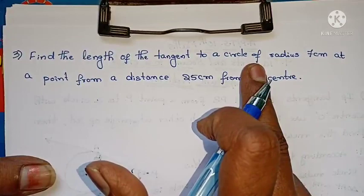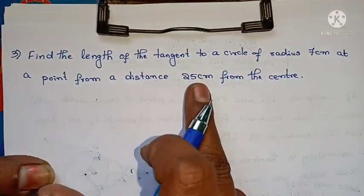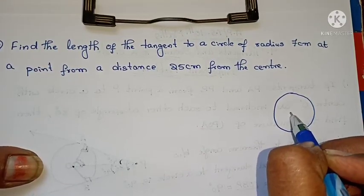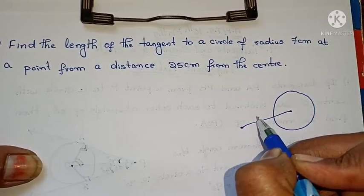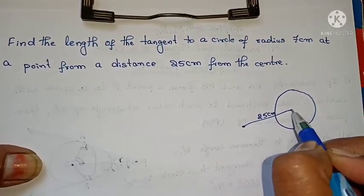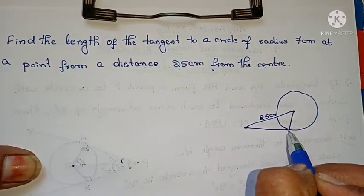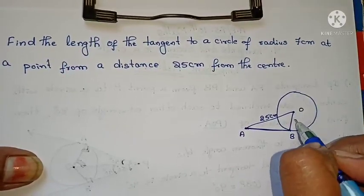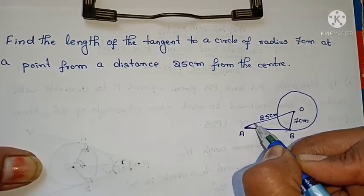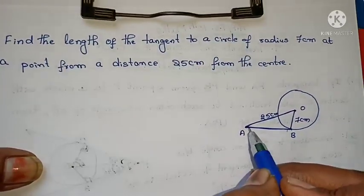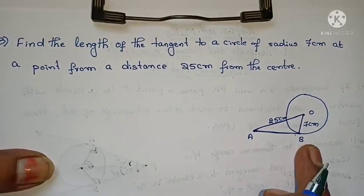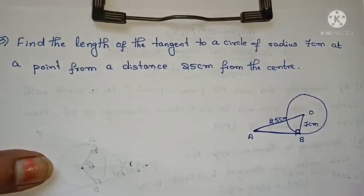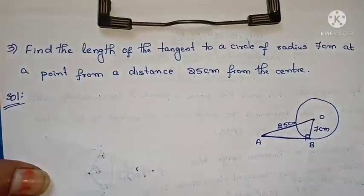Next question: find the length of the tangent to a circle of radius 7 cm from a point at a distance of 25 cm from the center. We have a circle with center O, an external point A, OA equals 25 cm (distance from center to external point), and OB equals 7 cm (radius). The tangent AB meets the radius at 90 degrees.